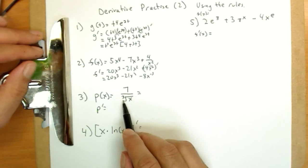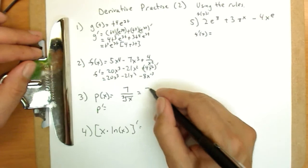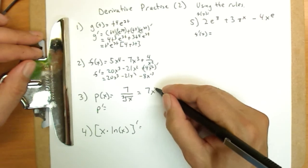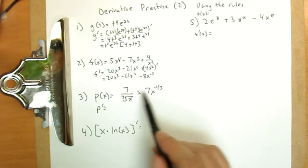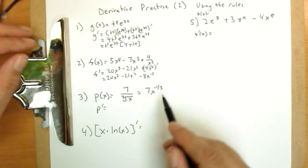Similar situation here. I have a cube root, which is a one-third power. But I'm going to be a little better off. This is seven times x to the negative one-third power. One-third power is cube root. Pulling up to the top, we would use a negative. Now I can use the power rule.